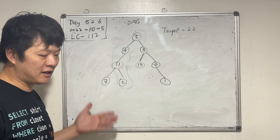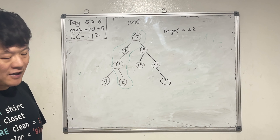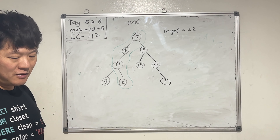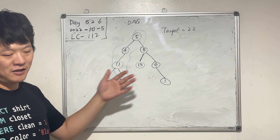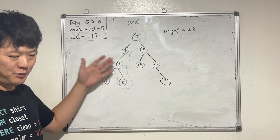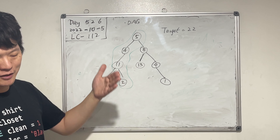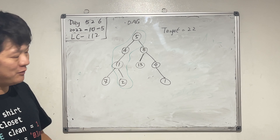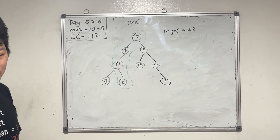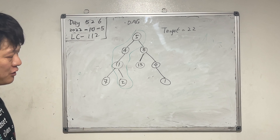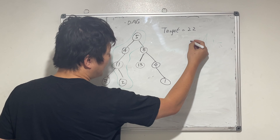Today we'll look at depth-first search, and in the next lesson we're going to talk about breadth-first search. For trees, most likely you use a traversal algorithm which could be depth-first or breadth-first search. There are quite a few different traversal algorithms — remember pre-order, in-order, and post-order.